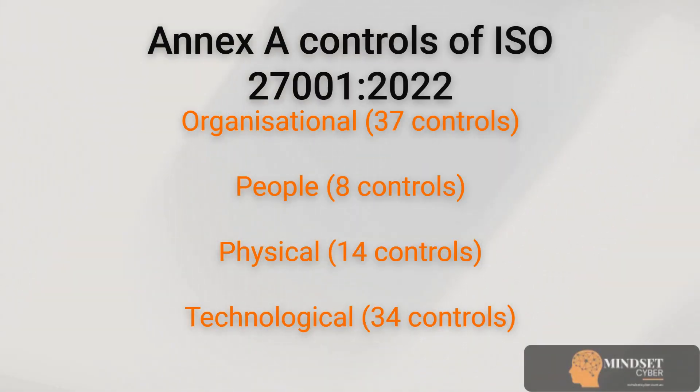Once you have them, focus on clauses 4 to 10. These form the backbone of your information management system. Then there's Annex A, which is a list of 93 information security controls, and ISO 27002, which shows you how to apply these controls in the real world. Now let's talk about the PDCA model — that's short for Plan, Do, Check, and Act. This is the cycle your ISMS will follow.